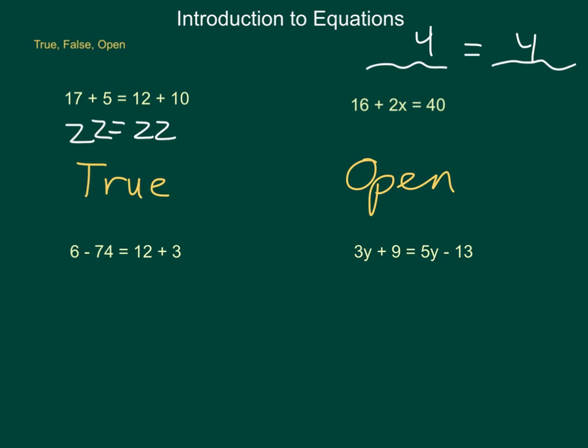Our third equation, located here, 6 minus 74 equals 12 plus 3. Simplifying the sides, 6 minus 74 is negative 68. 12 plus 3 is 15. This is not the case. So we would constitute this as being a false equation.